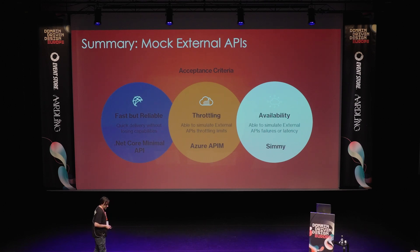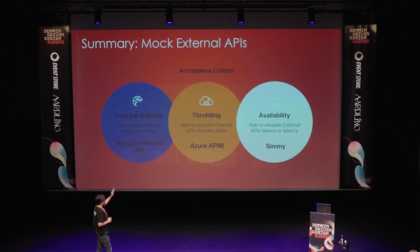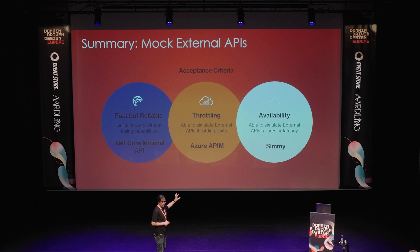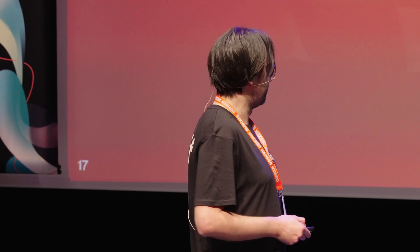As a summary: it's fast but reliable. The .NET Core minimal API allows you to do throttling via configuration on the API Gateway and API Management. And you can easily simulate faults with configuration files once you add the Simmy NuGet to your project. Or you can just use Mocoon, which is a readily available tool that would basically make this whole talk unnecessary. Anyway, thank you very much!